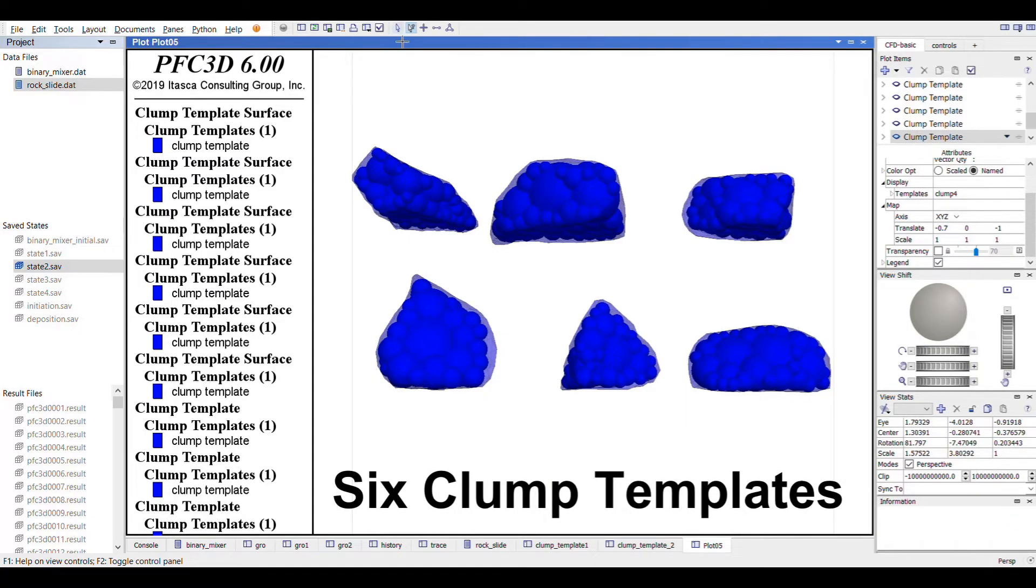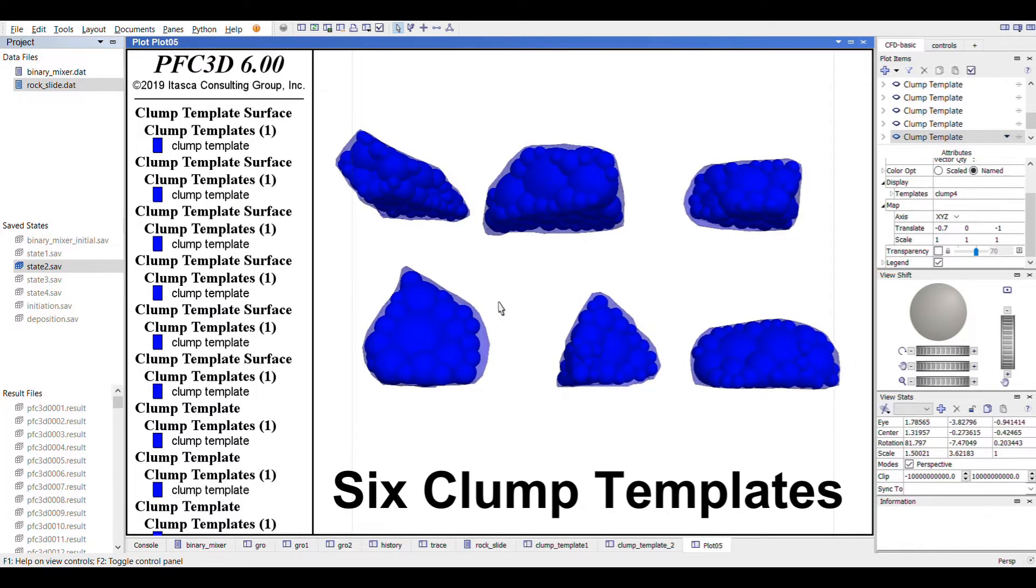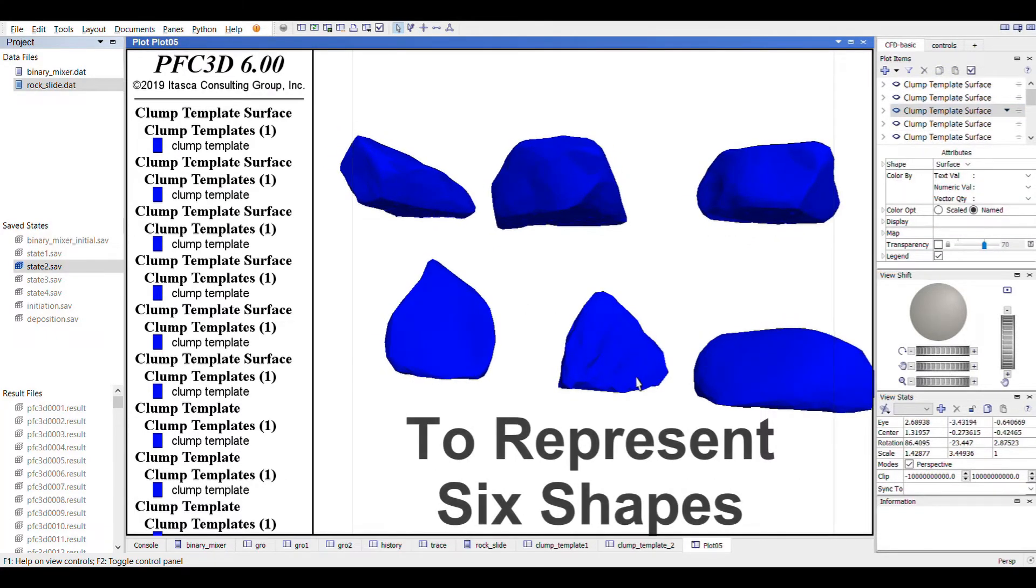Now these are the six types of clump templates we have generated to simulate the boulders and rocks in the slope.